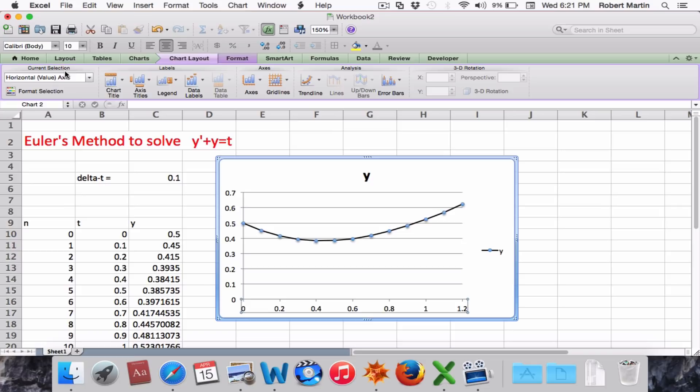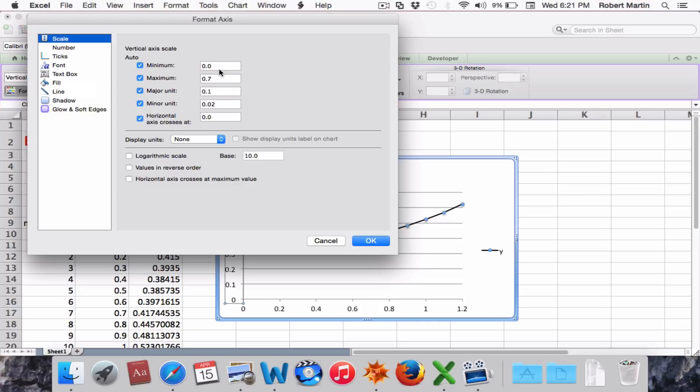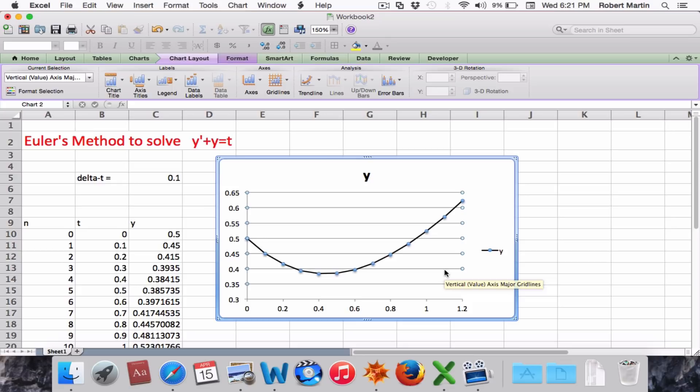That's a horizontal scale. Coming over here and doing our vertical values and adjusting that scale. We want to go from 0.3 to 0.65 is okay. And we don't want it to be automatic. We want it to be fixed values, as you'll see why in a moment. So there's a plot of our numerical solution for this differential equation.